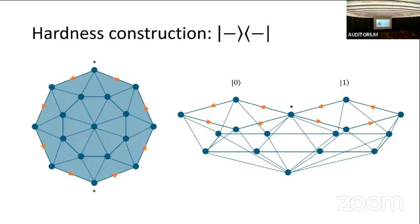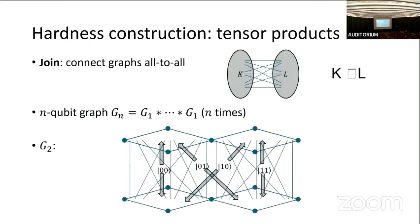That's how we implement projectors. Now, to move to two qubits and three qubits, we need a notion of tensor product. If I have two graphs, the tensor product version is the join — I put them side by side and connect them all-to-all. This implements the tensor product on the chain complexes, defined by the Künneth formula, which comes up in error correction quite a lot. The n-qubit graph is the n-fold join of the single-qubit graph. For two qubits, you can see the four two-qubit states as the joins of the various loops.